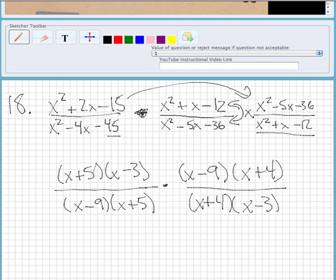Now since it's multiplied, we can just make it all one fraction. And then what we're going to do is start canceling out.